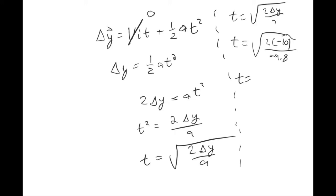You can plug that into your calculator — this is about 1.3 seconds. So if you're holding a ball 10 meters in the air, which is about 30 feet, you should expect it to take about 1.3 seconds to fall to the earth.